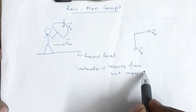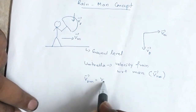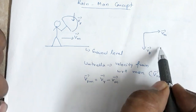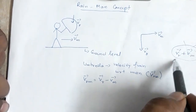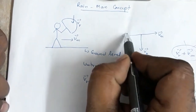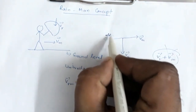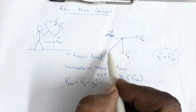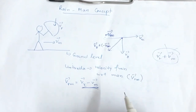We need to find Vrm, the velocity of rain with respect to man. Vrm = Vr − Vm. Now Vr is vertically downward and Vm is horizontal. The resultant of Vr and (−Vm) gives us the required vector Vrm. So Vrm = Vr + (−Vm), and the umbrella must be held in this direction.